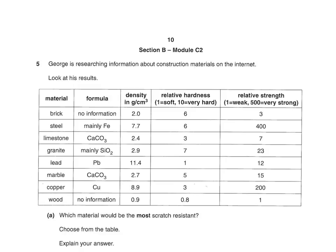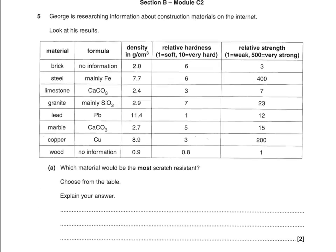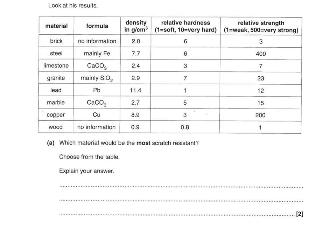On to the chemistry section. George is researching information about construction materials on the internet. Which material would be the most scratch resistant? The most scratch resistant is the one that is the hardest, so you're looking at the relative hardness in the table. The one that is most scratch resistant is granite, because it has the highest hardness. So that's two marks — one for granite, and then one for saying it is the hardest.